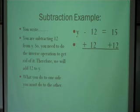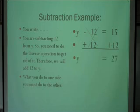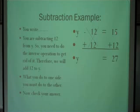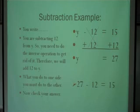The left side will cancel out, leaving just the letter Y. The right side will give you the answer: 15 plus 12 equals 27, so Y equals 27. Now we use substitution to check: put the 27 in Y's place and work the original problem. Is 27 minus 12 equal to 15? Yes, it is.